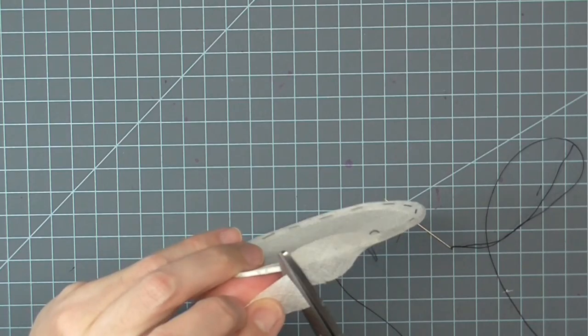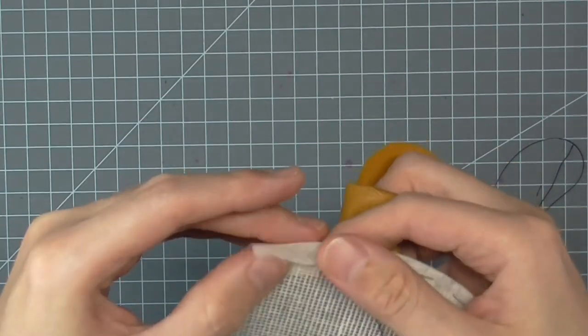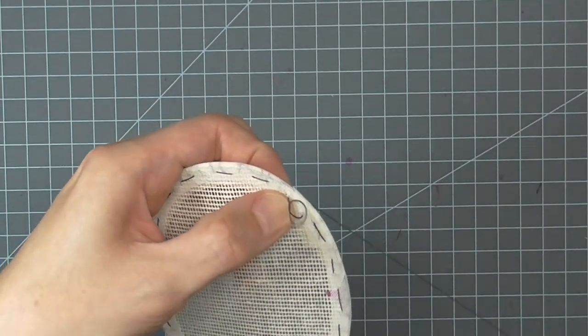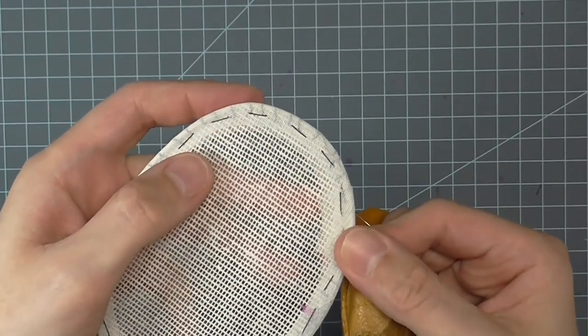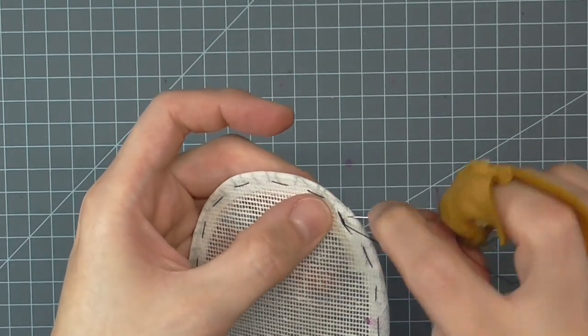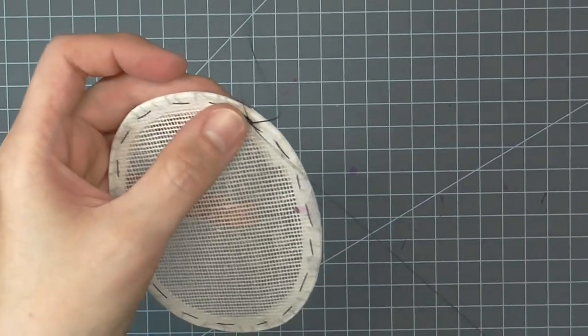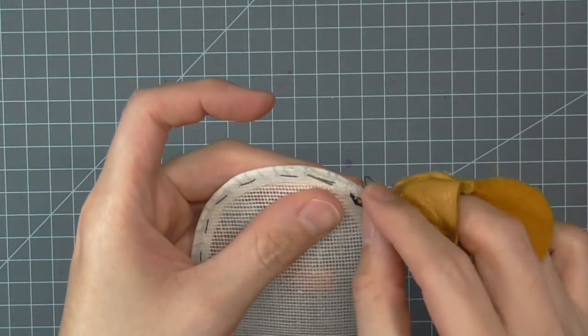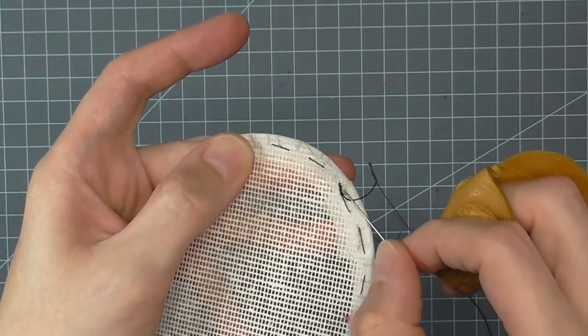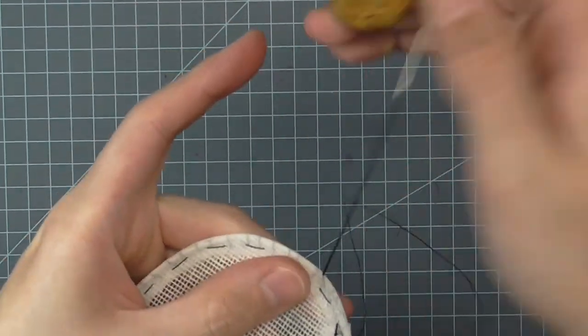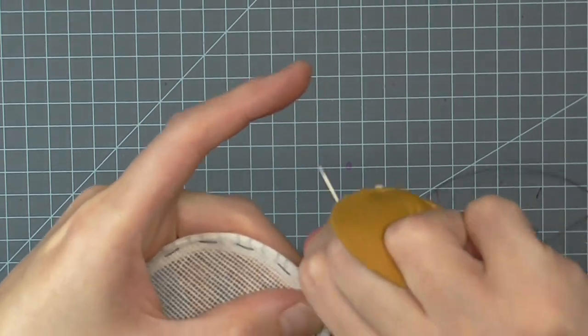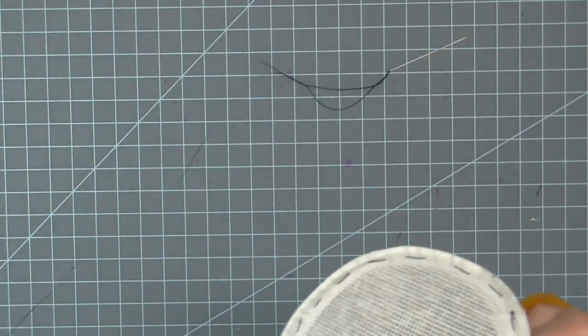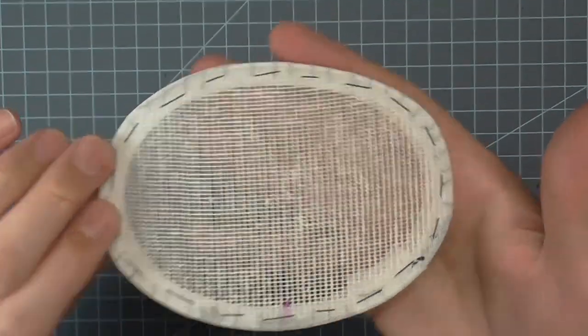Once you get to the end, cut off any excess leaving about one inch of tape to overlap on the other end. Continue sewing over the end. When you're done sewing, make a few knots to anchor the thread, then bury the thread through the two layers of crinoline. Clip off the excess thread. Your piece is now ready for fabric.